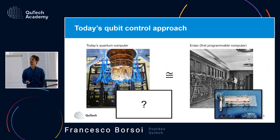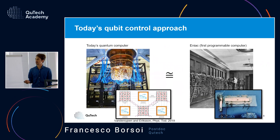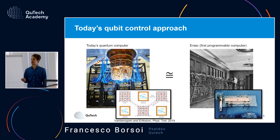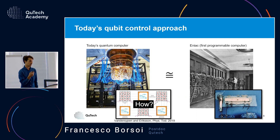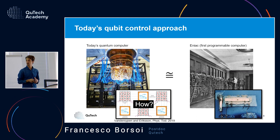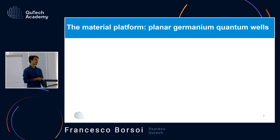The community believes that integration of classical electronics together with registers of quantum dot qubits, controlled with a relatively small number of lines, is what we need to make this compact. To control a large number of quantum dots with very few control lines, we need to control the energy of, say, ten quantum dots with the same line. This requires very large material uniformity, which led us to choose planar germanium quantum wells.